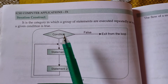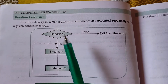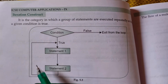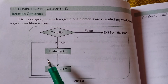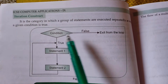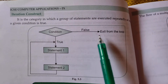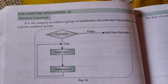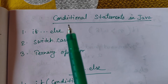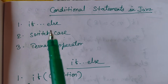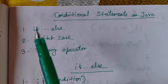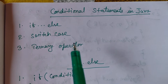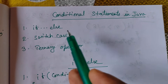So in iteration construct, as long as the condition is true our statements will be executed, and when it becomes false it will come out from the loop. Now our new topic is conditional statements in Java. We have three: if-else, switch-case, and ternary operator. First we will talk about if-else.